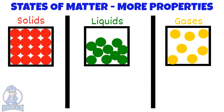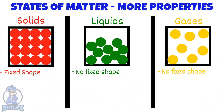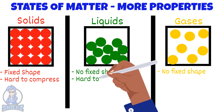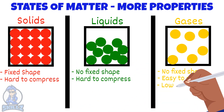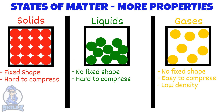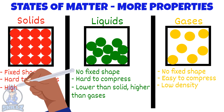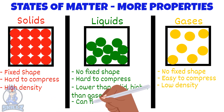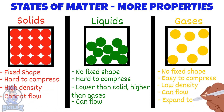Here are some more properties of each state of matter. Solids have a fixed shape but liquids and gases do not. Solids and liquids cannot be compressed as easily as gas can be. Gases have a very low density compared to liquids, which have a higher density than gases but a lower density than solids, which have the highest density. Liquids and gases can flow but solids cannot. Gases will expand to fit all available space but solids and liquids do not.